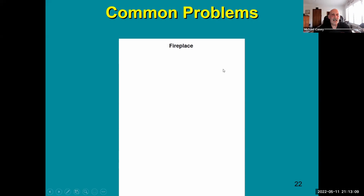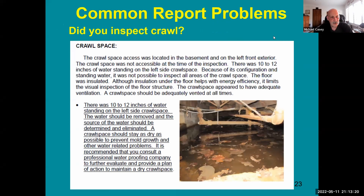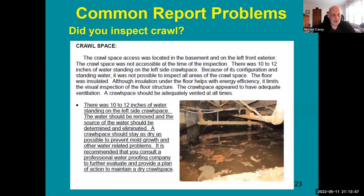Here's a crawl space inspection where the access was blocked and there were 10 to 12 inches of standing water. The inspector tries to note whatever he can see, including insulation — most of which is in the water. This is another wishy-washy approach. I would simply say: was not inspected, hidden defects most likely exist, get it cleaned up and we'll come back — and state the fee. Don't try to partially inspect in these conditions.